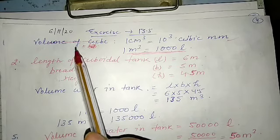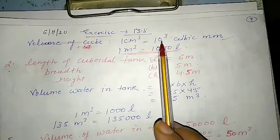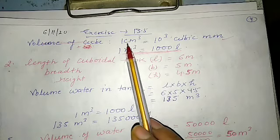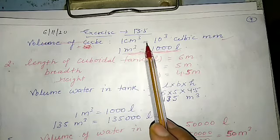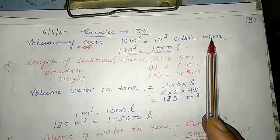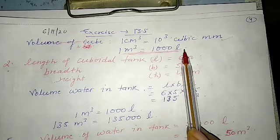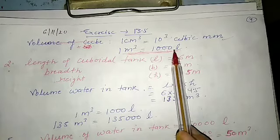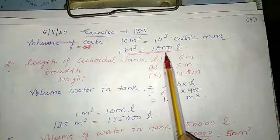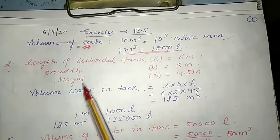Before the discussion, we just want to tell you about the unit conversions we frequently use in this exercise. 1 centimeter cube equals 10 to the power 3, or we can write 1000 cubic millimeters. 1 meter cube equals 1000 liters. When converting liters to meter cube, always divide; when converting meter cube to liters, multiply.